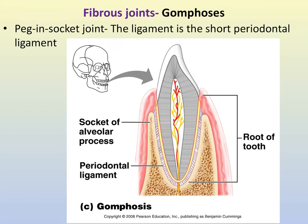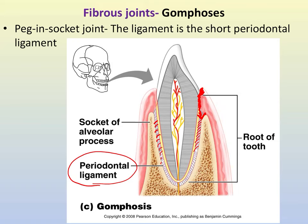A gomphosis — it might surprise you that your teeth are embedded in your mandible and maxilla but held in place by a ligament called the periodontal ligament. This is why if you have chronic tooth decay, you can lose your teeth: the infection can start to erode the gum, move between the tooth and the bone, and erode the connective tissue holding the tooth in the socket.